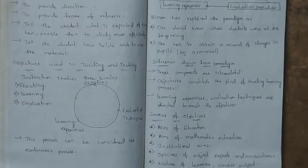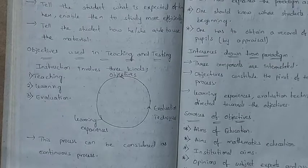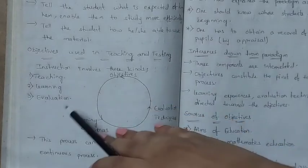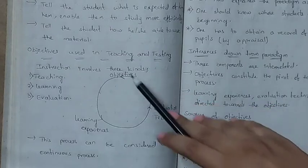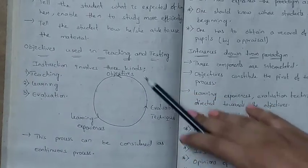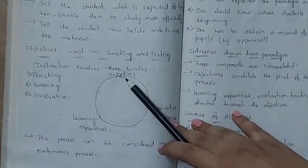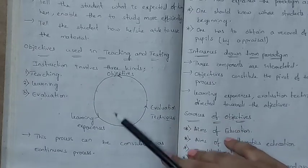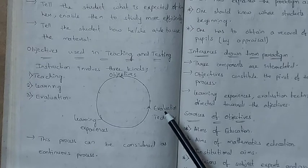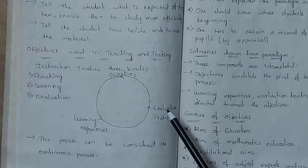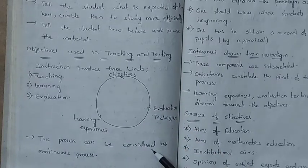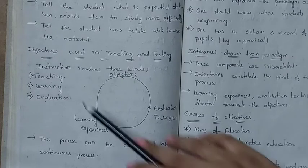So next - objectives used in teaching and testing. Instruction objectives lo manaki teaching, learning, and evaluation - ivi three kinds of instruction untayi. Manaki objectives kaani, learning experiences kaani, evaluation techniques kaani - mood kuda interrelated ayi untayi. Objectives chesthe tarvath learning experiences, malli evaluation, malli objectives, malli learning experiences, malli evaluation - iti continue avuttu untundi. Once manamu objectives create chesthe, tarvath objectives learning experiences dwara achieve cheyataniki, tarvath evaluation avutundi. So evaluation lo students correct ga objectives ni fulfill chesaru neda ledha ani chustamu.